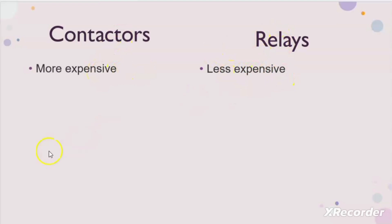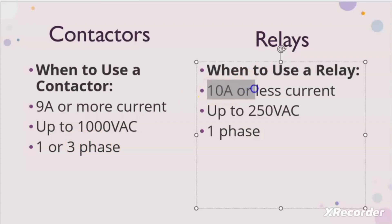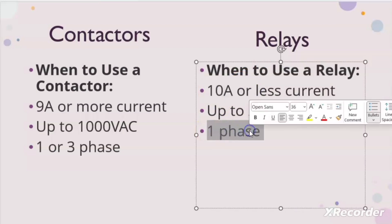The other difference between contactors and relay is their application — where to use the contactor and when to use the relay. Contactors are used for applications where the load current is 9 amperes or more, up to 12,500 amperes, and are used for both single phase and three phase applications. Relay is used up to 20 amperes of current and is limited to single phase applications.